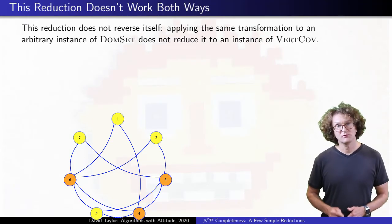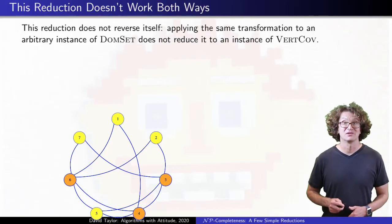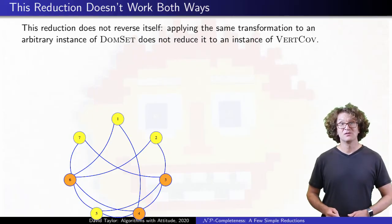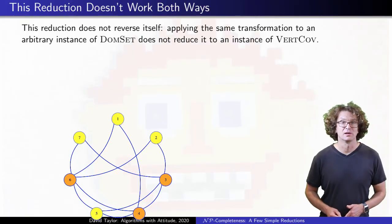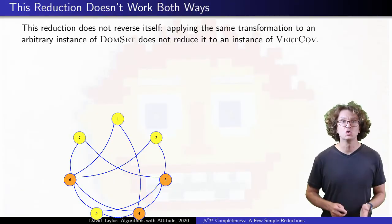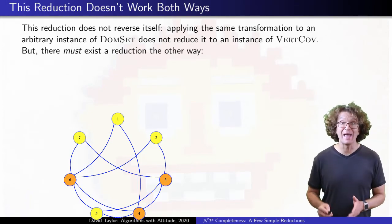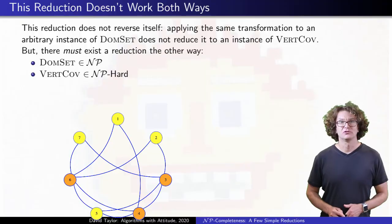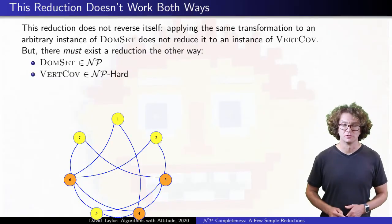But this reduction doesn't reverse itself. Unlike the previous reductions we saw, if we apply this transformation to the dominating set graph, it doesn't transform it to a helpful vertex cover instance. Given an arbitrary graph, we can't undo the transformation that went from vertex cover to dominating set — a graph like this one doesn't have those little triangle vertices and edges to remove to get a corresponding vertex cover problem. But there has to be a reduction in the other direction, because dominating set is in NP and vertex cover is NP-hard, so by the definition of NP-hard there must be some reduction from dominating set to vertex cover.